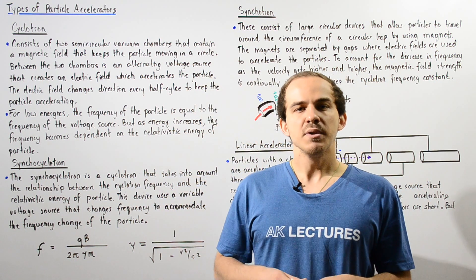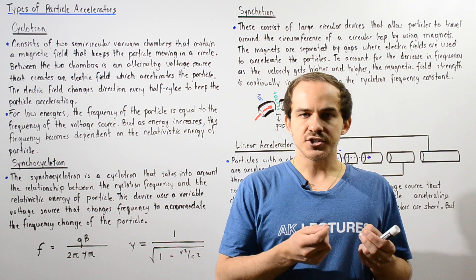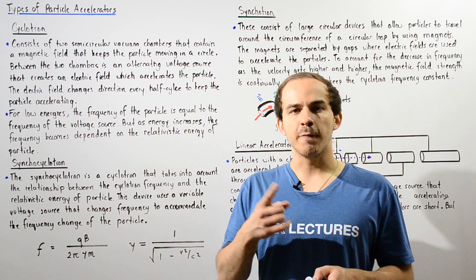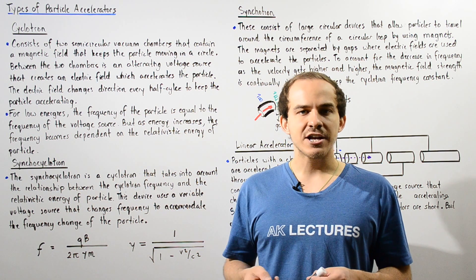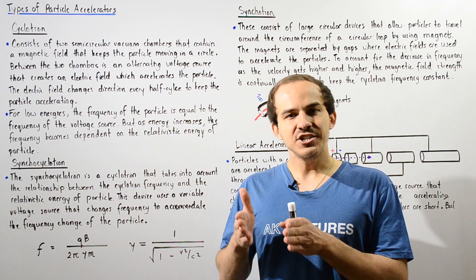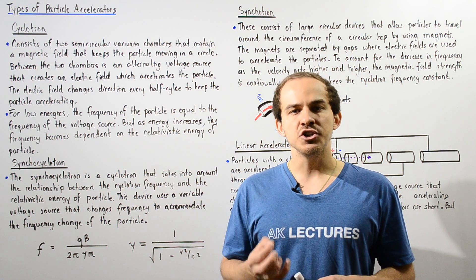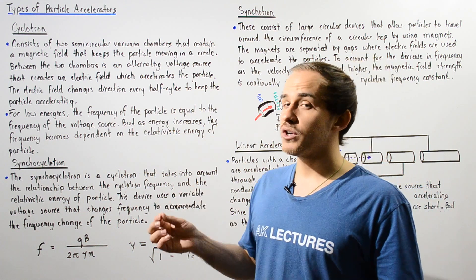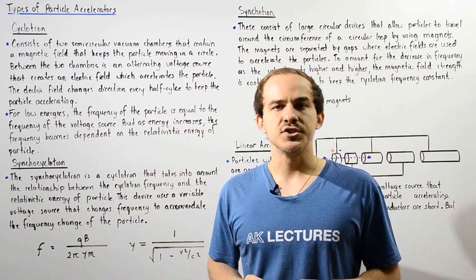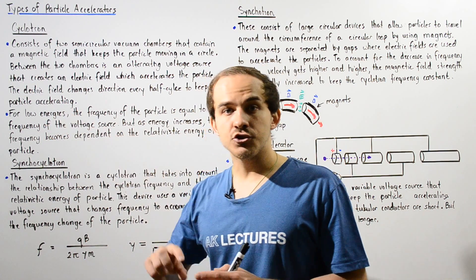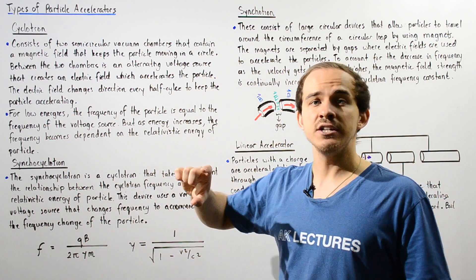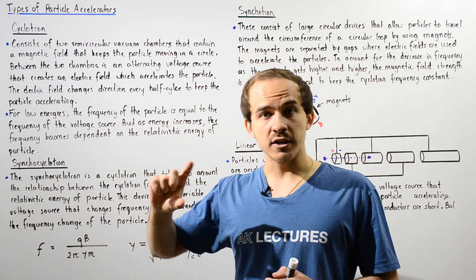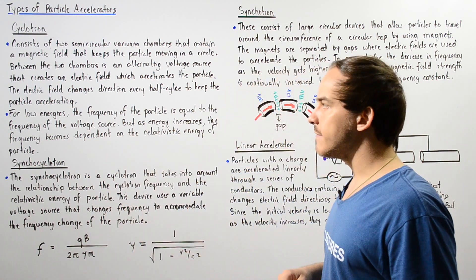The cyclotron basically consists of two semicircular D-shaped vacuum chambers that contain a magnetic field that keeps our particle moving in a circular fashion. Between our two D-shaped vacuum chambers, we have a region of space with a variable voltage source, and this variable voltage source creates an electric field that accelerates the particle. The electric field changes direction every half a cycle to keep that particle accelerating, because the particle changes direction also every half a cycle.